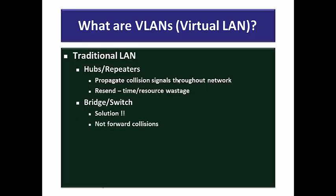The bridge or switch does not forward collisions through other ports. A collision happening on a particular port is limited because the bridge or switch has the inherent capability of filtering frames. It tries to forward frames only to the port it has to forward to. When a corrupted frame comes in, it filters it out so the collision is restricted. However, the layer 2 device also has a major drawback.